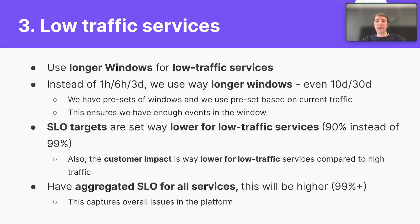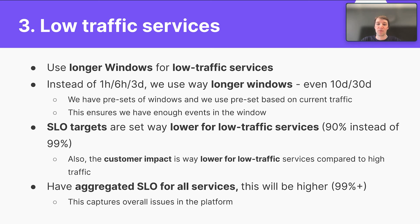To solve this, we take three measures. First, we use longer windows for low traffic services — instead of one hour, six hours, and three days, we use longer windows like 10 days and 30 days for the smallest services. We have presets of time window combinations used based on each service's traffic level, ensuring the windows generally have enough samples. Second, the SLO targets are much lower for low traffic services — for example, 90% instead of 99% — reflecting that customer impact is also much lower. Third, we create an aggregated SLO for all services together, which has a higher SLO target and captures overall platform issues common to all services.